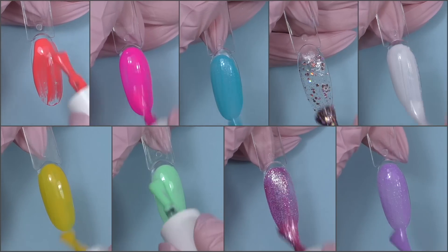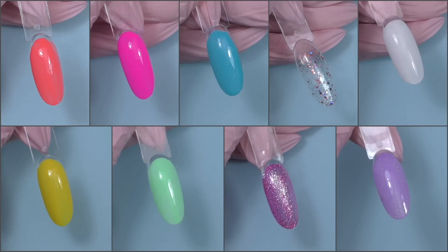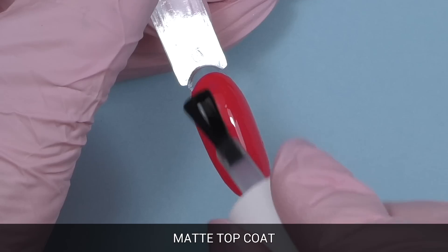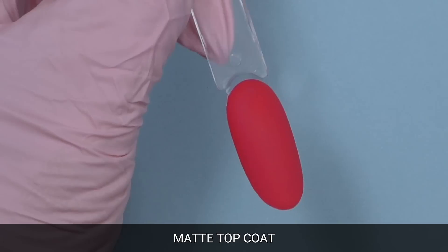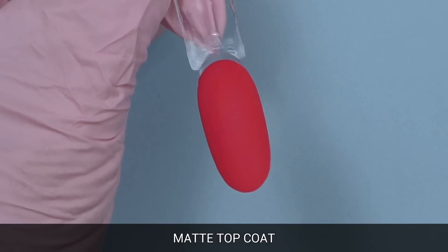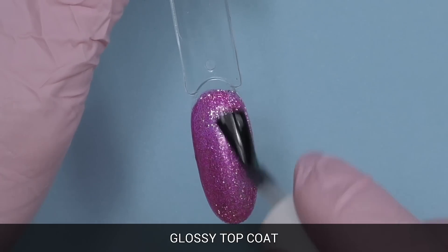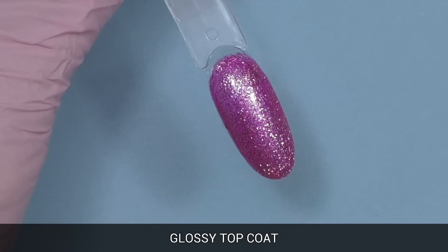Let's take a look at the colors. Most colors have great coverage with just one coat, but the ones that include glitter will need at least two coats. Matte top coat looks like satin, which is so awesome, and this is the glossy top coat.